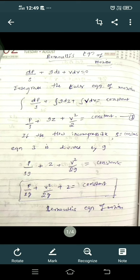If you integrate this equation, we'll get: integration of dp (if ρ is constant) is p/ρ, plus integration of g dz (the integration of dz is z, g is constant), plus integration of v with respect to dv is v²/2, equal to constant.